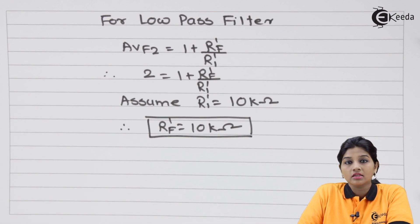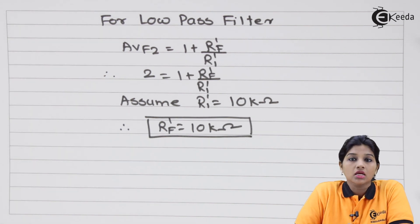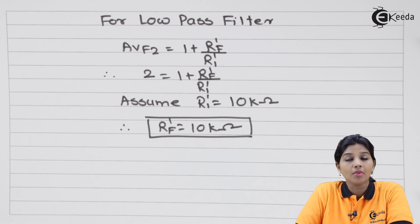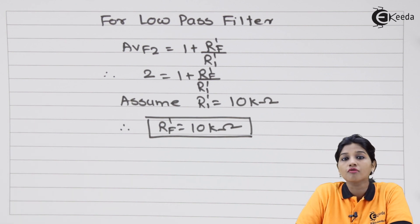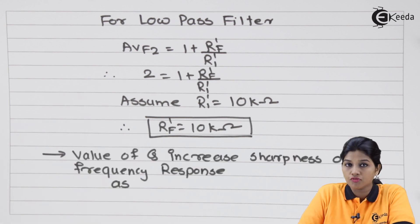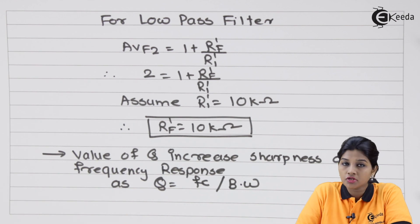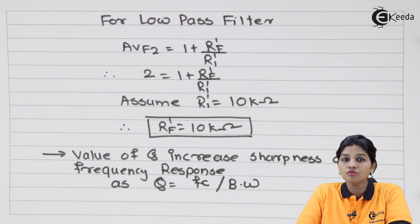This is how we calculate the values of various components required to build the high pass and low pass filter circuits, which together form the wide band pass filter. Regarding the effect of Q: as the value of Q increases, the bandwidth is reduced and the frequency response becomes sharper. So Q equals fc divided by bandwidth — as Q increases, bandwidth reduces and the response becomes more and more sharp.